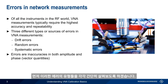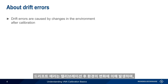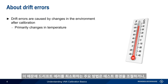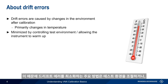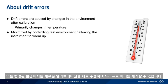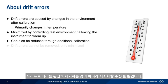Let's start by taking a brief look at each of these error types. Drift errors are caused by changes in the environment after calibration, and the majority of drift error is caused by temperature changes. Because of this, the main way to minimize drift error is to control the test environment and allow the instrument time to warm up. Alternatively, we can remove drift error by performing a new calibration in the changed environment. However, even if we take these steps, we can only minimize drift error,